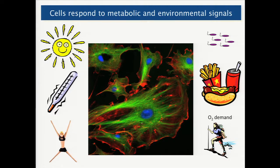This holds true not only for light, but for a number of different inputs — and that's what makes cells quite remarkable: both the diversity and number of different types of inputs that can be recognized and responded to. These include light, temperature, mechanical stress such as pulling or pushing on cells, the status of pathogenic infection, the amount and diversity of nutrients consumed, and changes in oxygen availability, such as those experienced when hiking in the mountains and climbing to altitude.